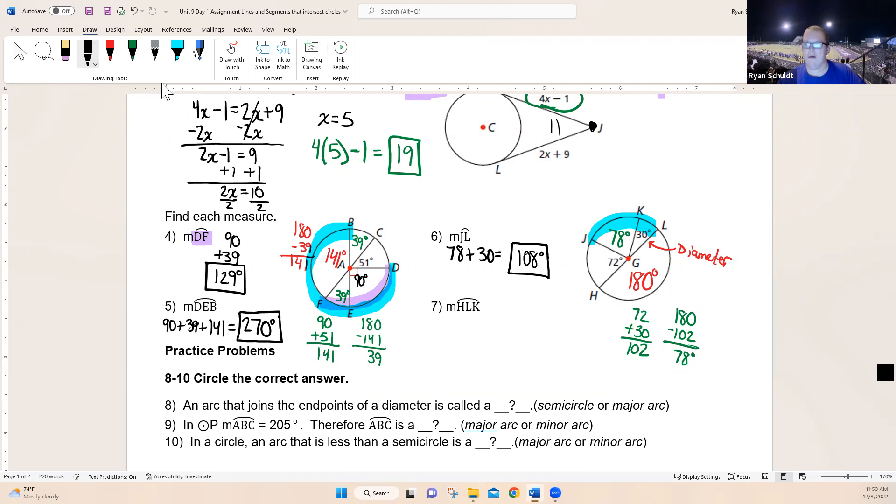Now they want us to do the measure of HLK. HLK is three letters, so I have to go the long way around. H—now I'm going to hit up L, and then we're going to go to K. 180 plus 30 is going to give us 210 degrees.